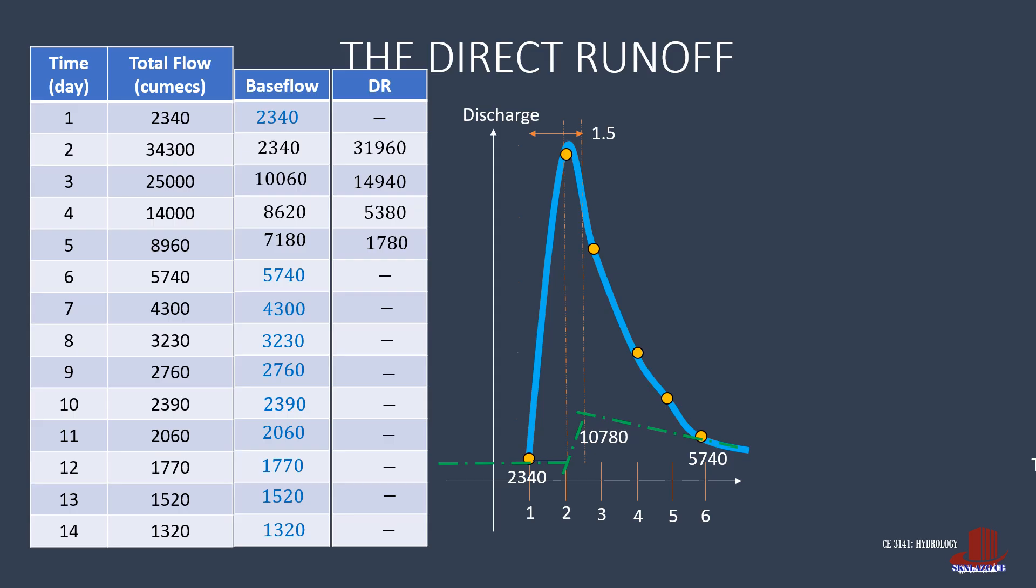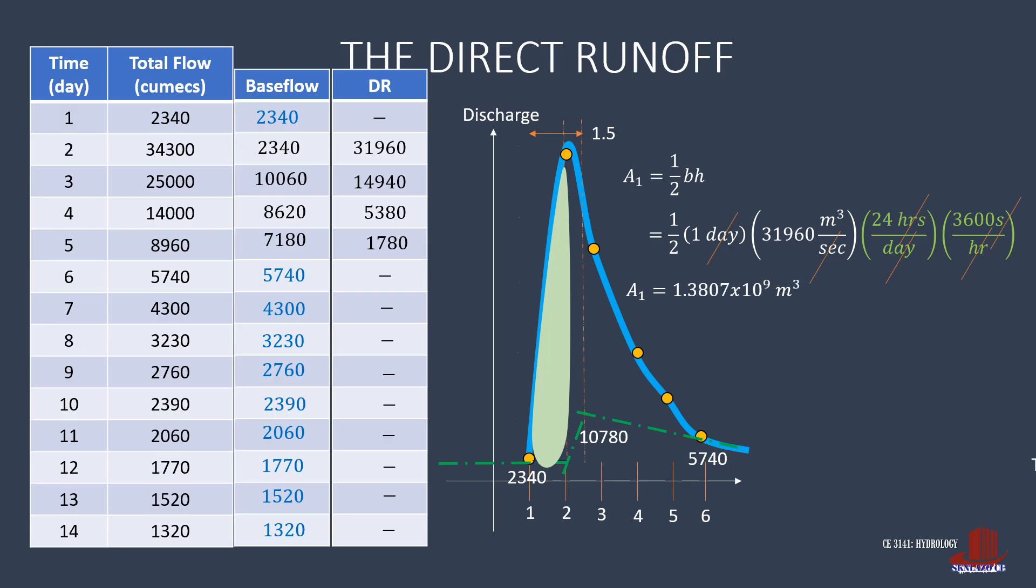To solve for the volume of direct runoff, we take the area of the hydrograph. The volume can be broken down to different intervals, first of which is the area from the start of runoff to the peak discharge, which is somehow a triangle. So area 1 is half of base times height, or half of 1 day times height of DR, which is 31,960 cubic meters per second. Use the conversion factors of 24 hours per day and 3,600 seconds per hour, where days, hours, and seconds cancel out. So the first area is 1.3807 megacubic meters.